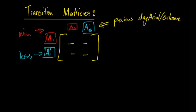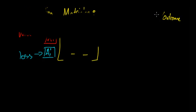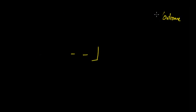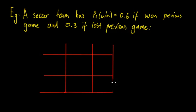Don't worry too much if this confuses you, but it is the general layout. So if we get an example - this is one we've previously done. A soccer team has a probability of winning of 0.6 if they've won the previous game and 0.3 if they've lost the previous game. We'll set up a table and this will give us the transition matrix.